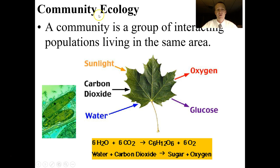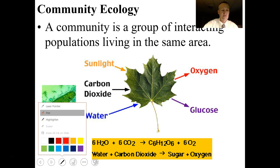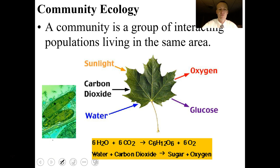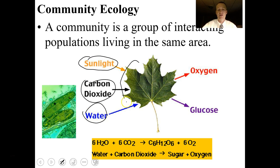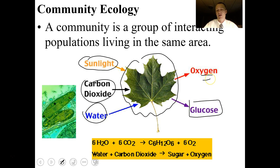All the communities on land are going to exist because of photosynthesis. I wanted to refresh your memory about photosynthesis. Photosynthesis takes place in autotrophs — it takes sunlight, carbon dioxide, and water, and in a very sophisticated process, the photosynthetic organism produces glucose and releases oxygen as a waste product. This is the equation for photosynthesis.